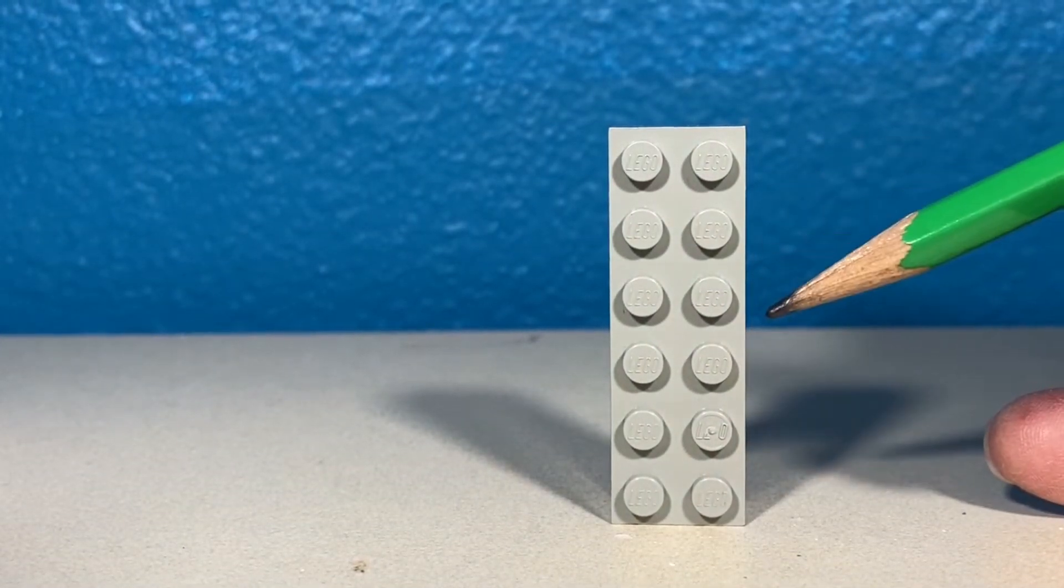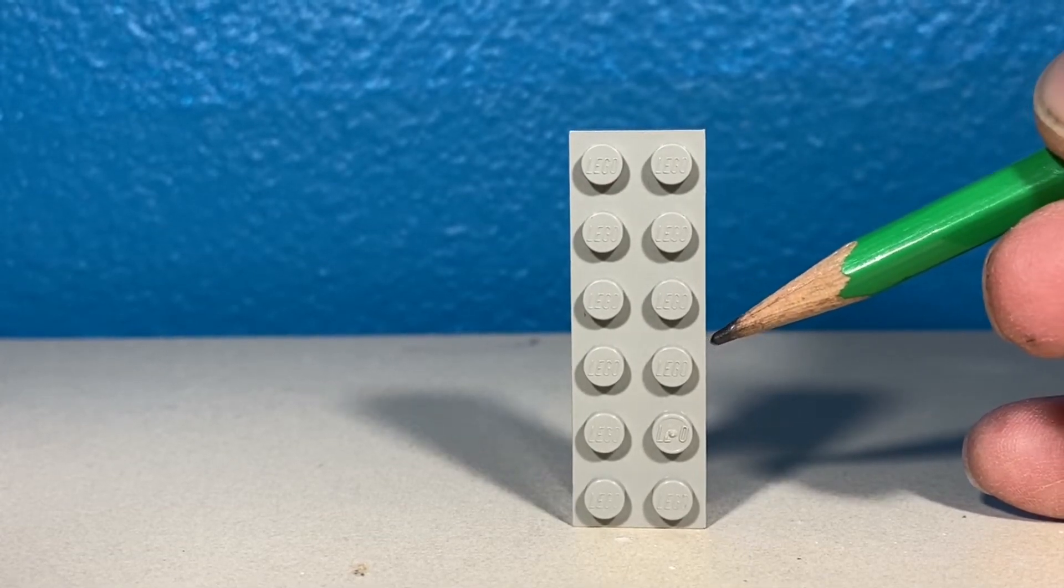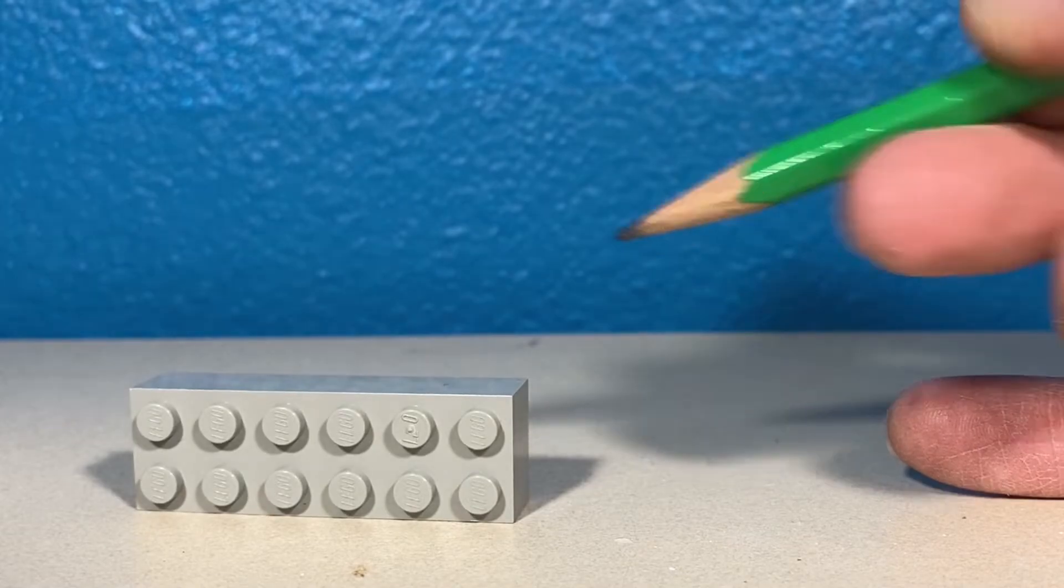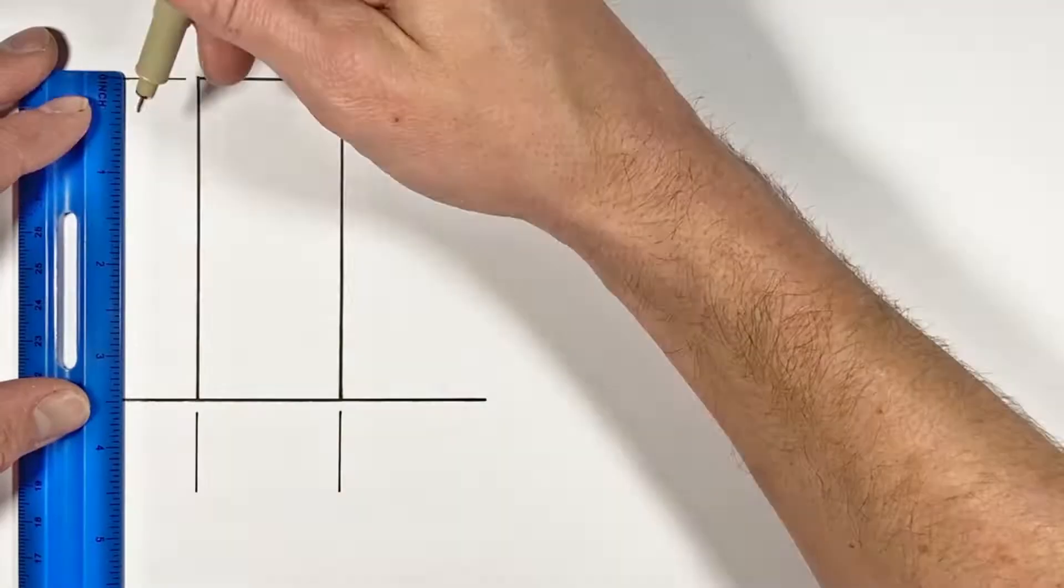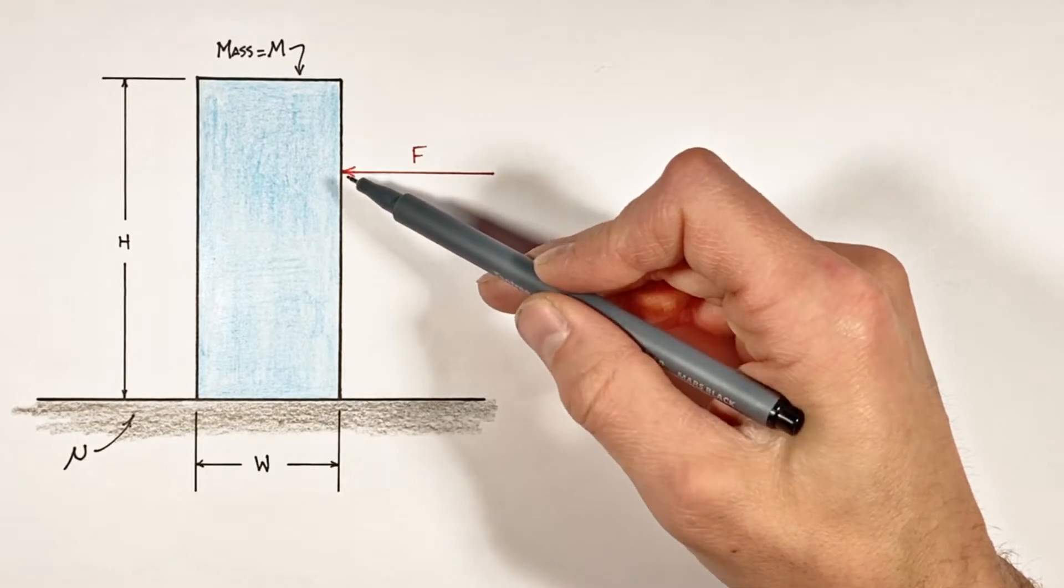Now in order to determine whether the block is going to slide or tip, the first thing we need to do is take a look at all the forces which are acting on this block.